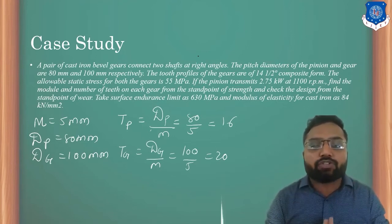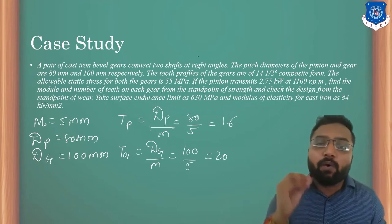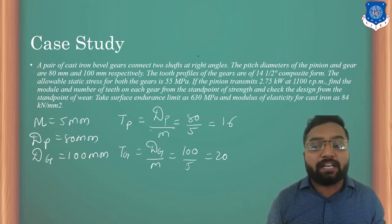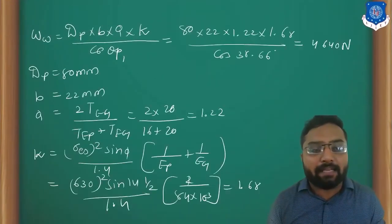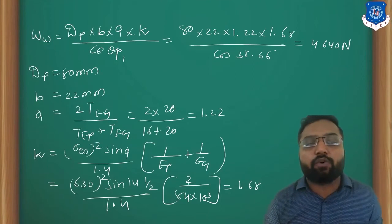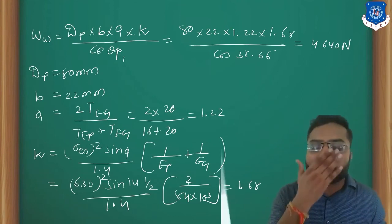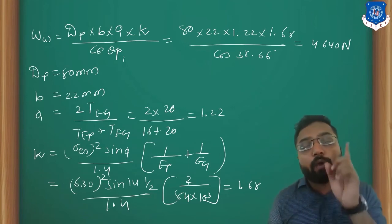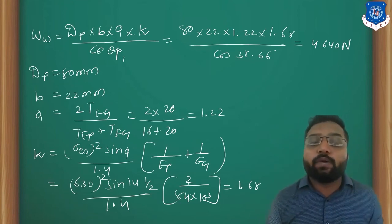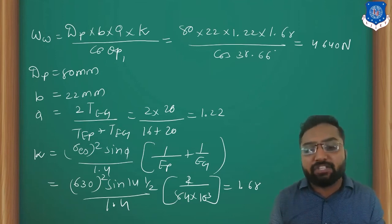After finding Tp and Tg, we moved on to find our wear load. To find the wear load, we required the endurance limit and the elastic modulus of elasticity. The equation is: WW = DP × B × Q × K, where DP is the diameter of the pinion, B is the face width (22 mm from the design data book), Q is the velocity ratio factor = 2 × Tg / (Tp + Tg) = 1.22, and K is found from the endurance limit and elasticity modulus.